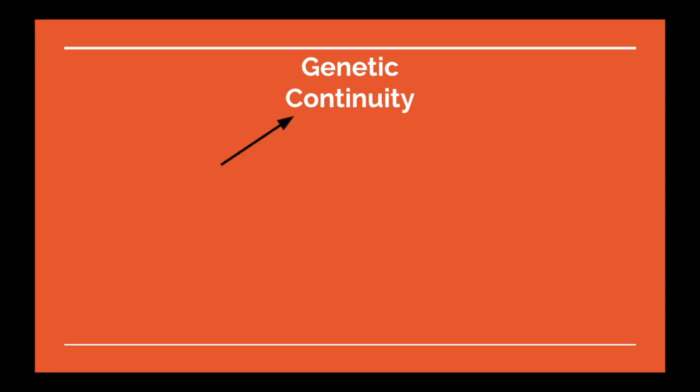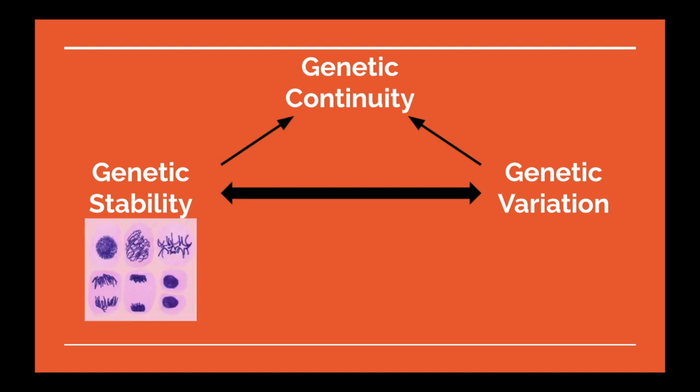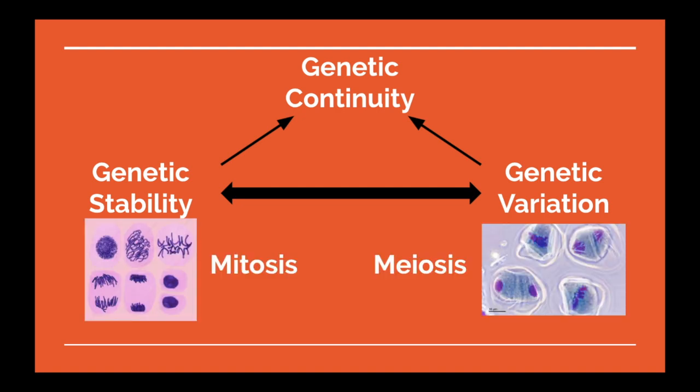The continuity of a species requires a mix of genetic stability and genetic variation, and a species achieves these through the processes of mitosis and meiosis respectively.